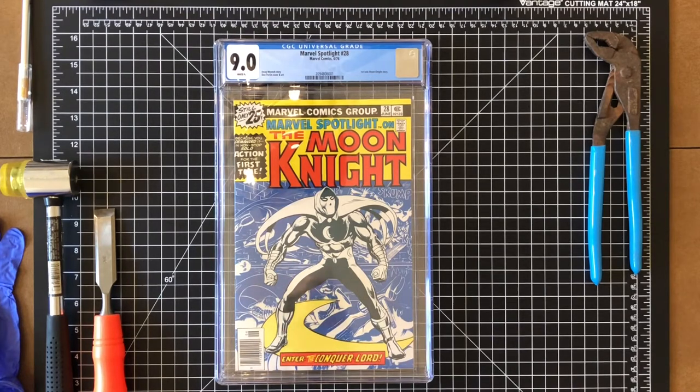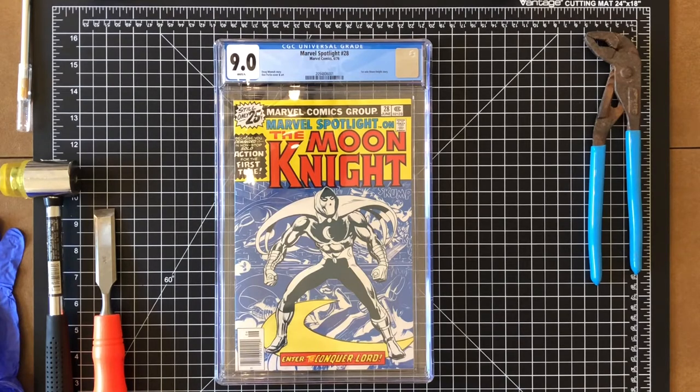I will say that CGC is probably the hardest one to do, PGX being the easiest. Those things pretty much fall apart, at least their older ones. CBCS changes their case every week, so it kind of depends which one you have on the table at that moment. Those tend to be a little easier as well.